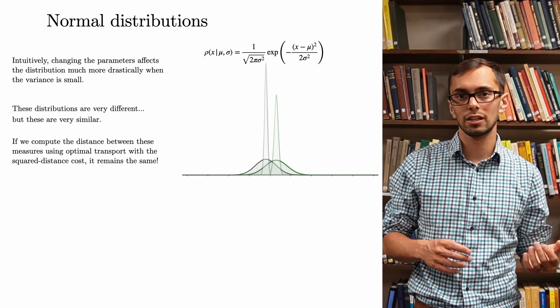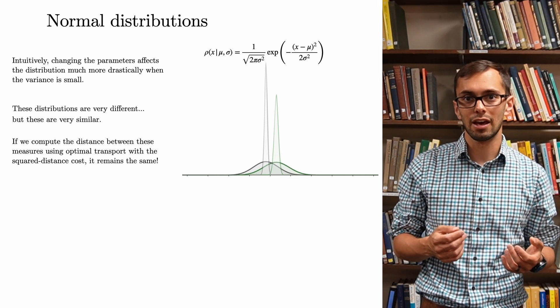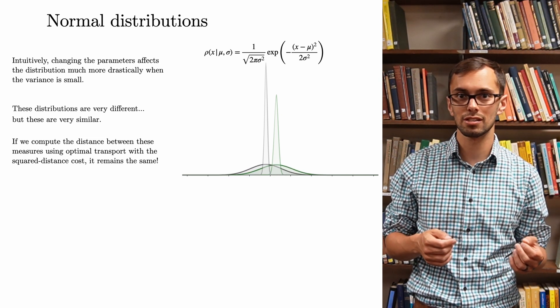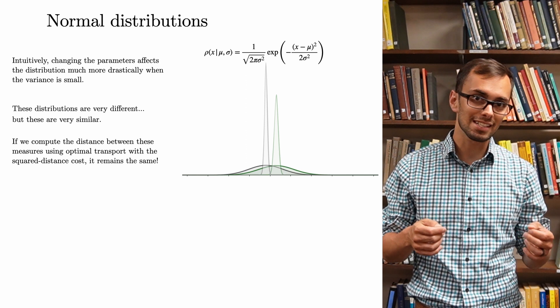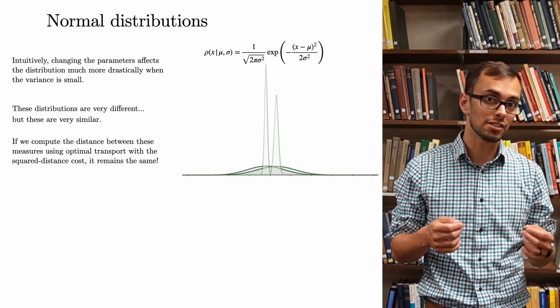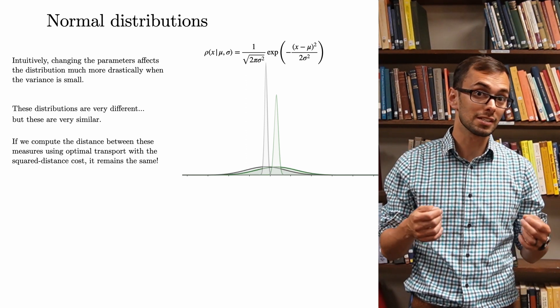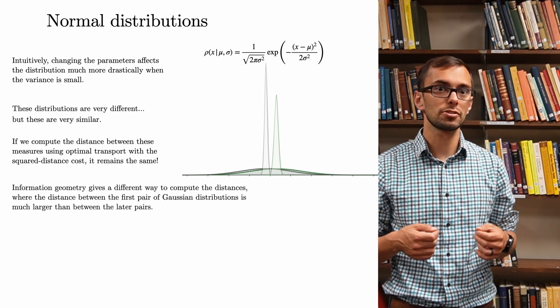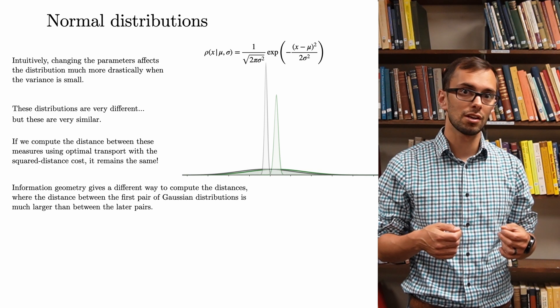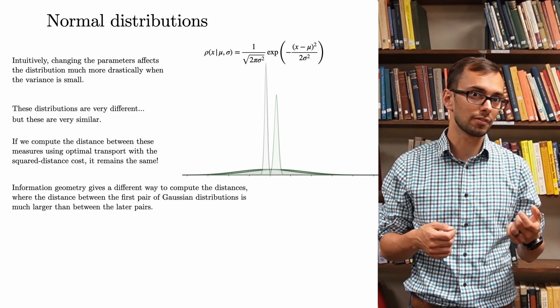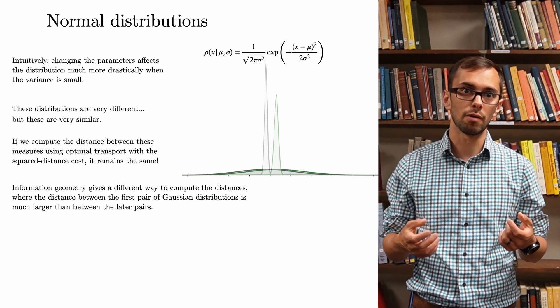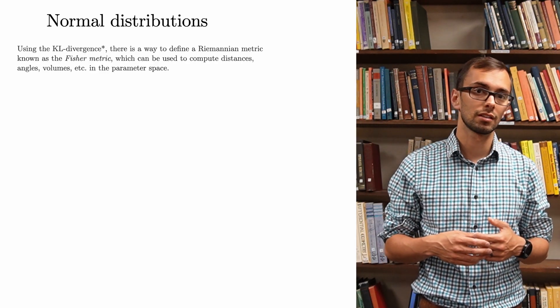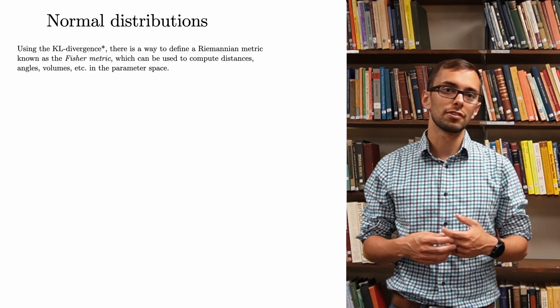But these are very similar, and we want some way to make that precise. However, if we use optimal transport and the square distance cost to compute the distances between these distributions, it turns out that the distance between these pairs of measures does not change. It remains constant. On the other hand, information geometry gives a different way to compute the distances, where the distance between the first pair of Gaussian distributions is much larger than between the later pairs.